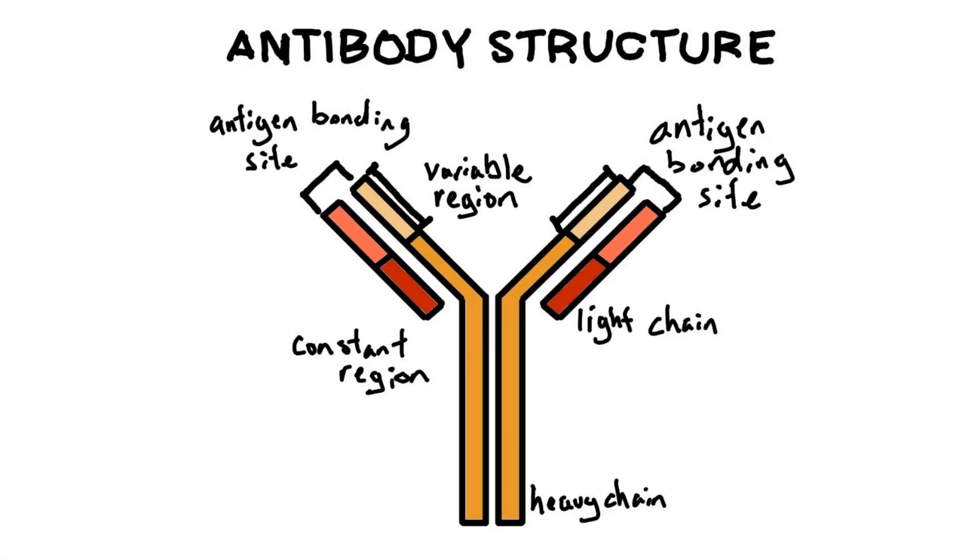Now, let's move from the cellular level to the molecular level. Each arm of the Y is made of two parts, a heavy chain and a light chain. Together, they form the antigen binding site which sticks to the virus. They're highly specific, like a key fitting a lock. That tip is part of the variable region, which changes to match different invaders.